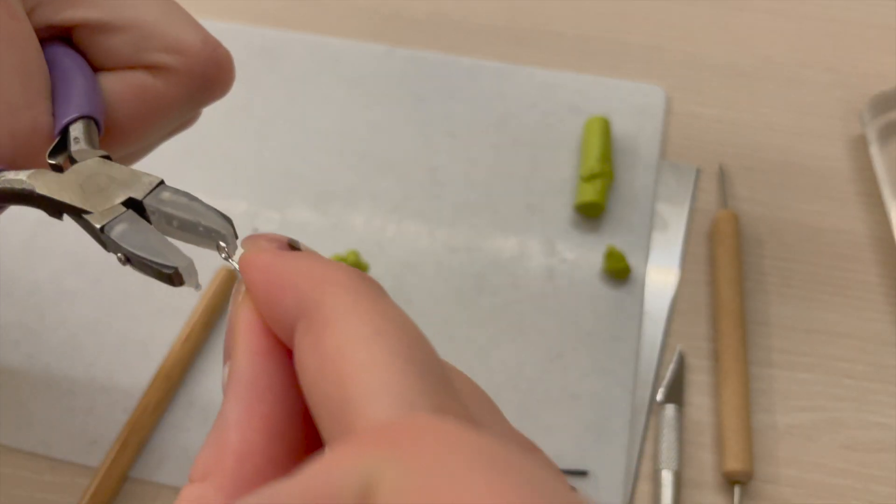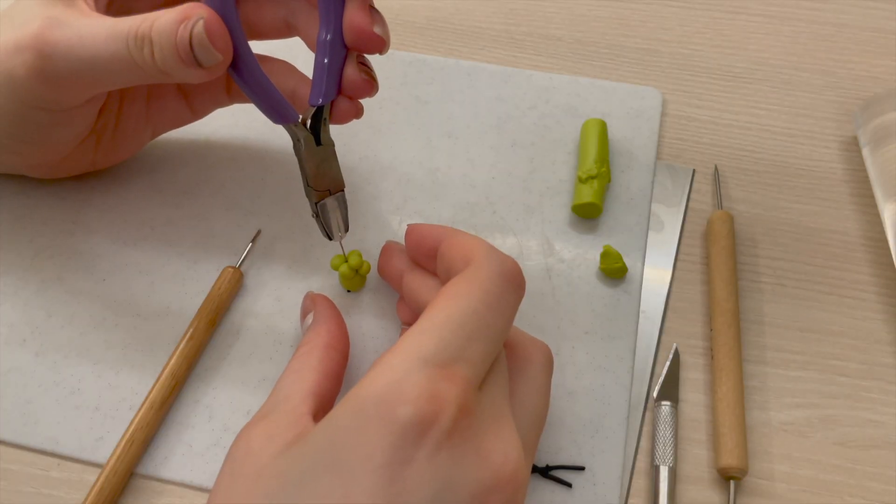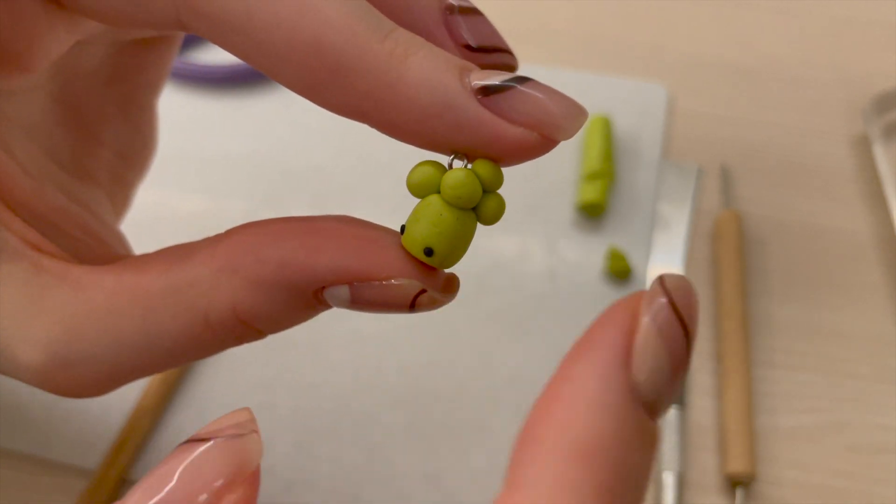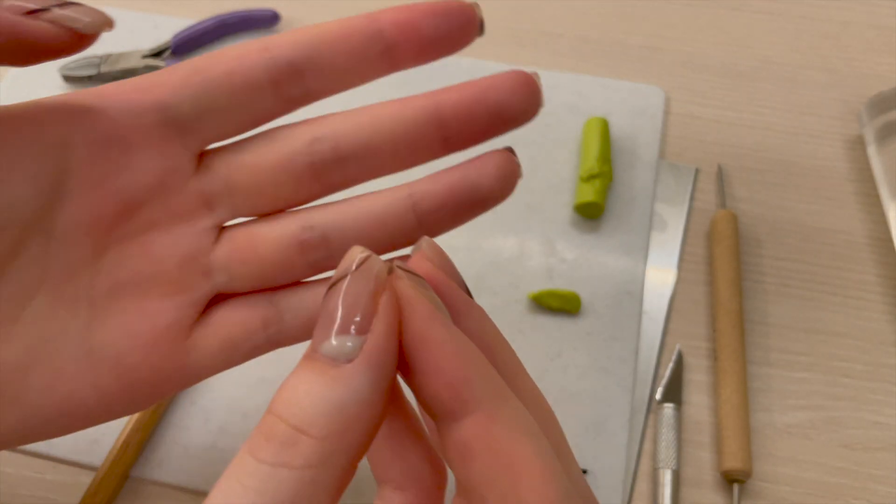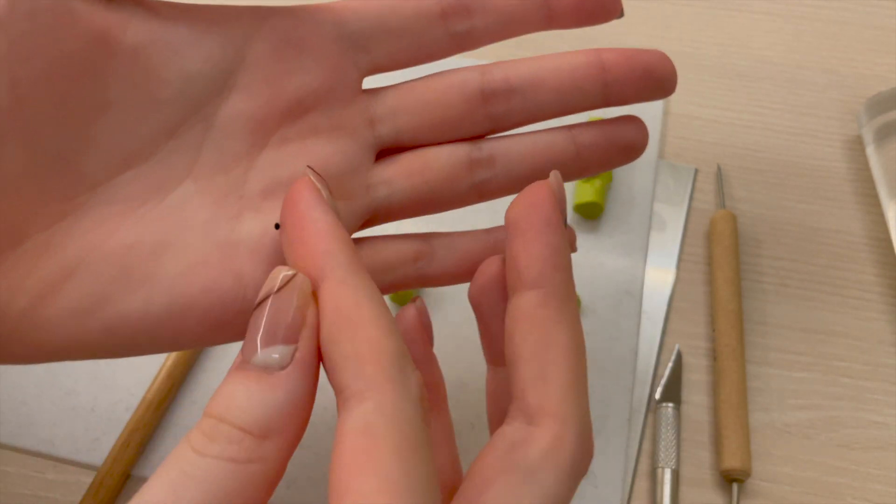And I'm gonna make one more ball to go on the top. There we go. I actually think that I'm gonna make one more ball to go over there. I'm gonna redo this eye. My nails keep indenting like everything I make and it's really annoying.